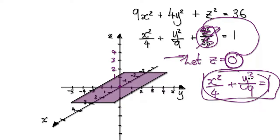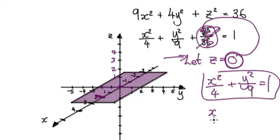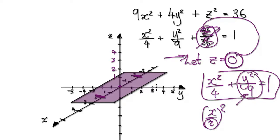Looking at this, you can see that in the x direction you're going to have an ellipse where it will be 2, because you imagine this as x over 2 squared — so this is 2 here and negative 2. Then in the y direction it would be 3. So in effect you would have an ellipse looking something like this on the horizontal sheet at z = 0.